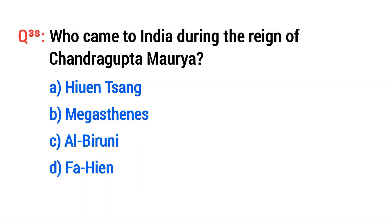Question thirty-eight: Who came to India during the reign of Chandragupta Maurya? The right option is B: Megasthenes.